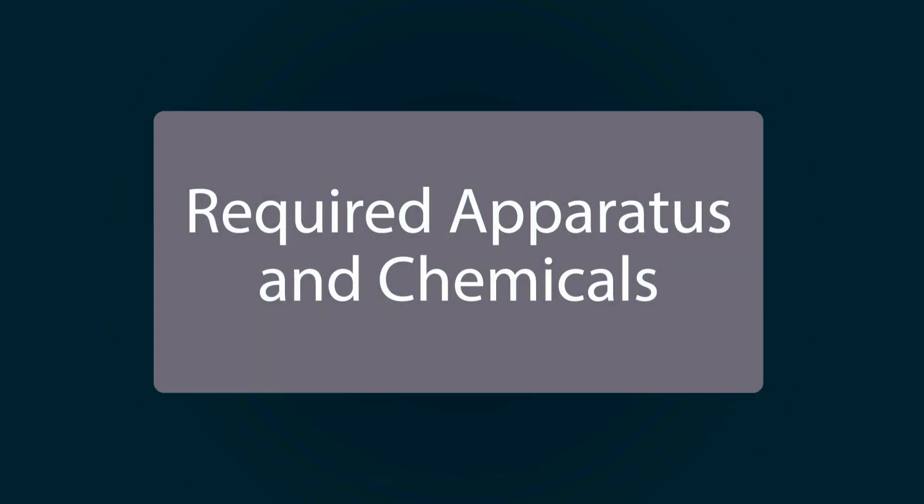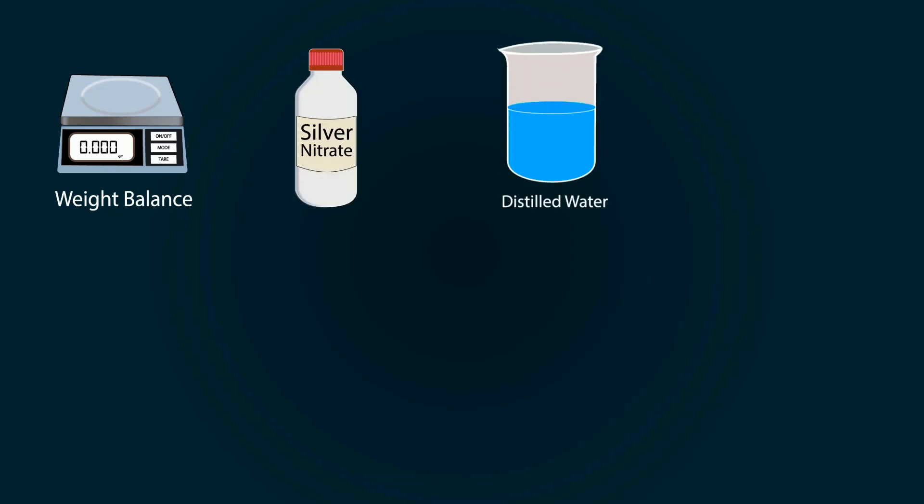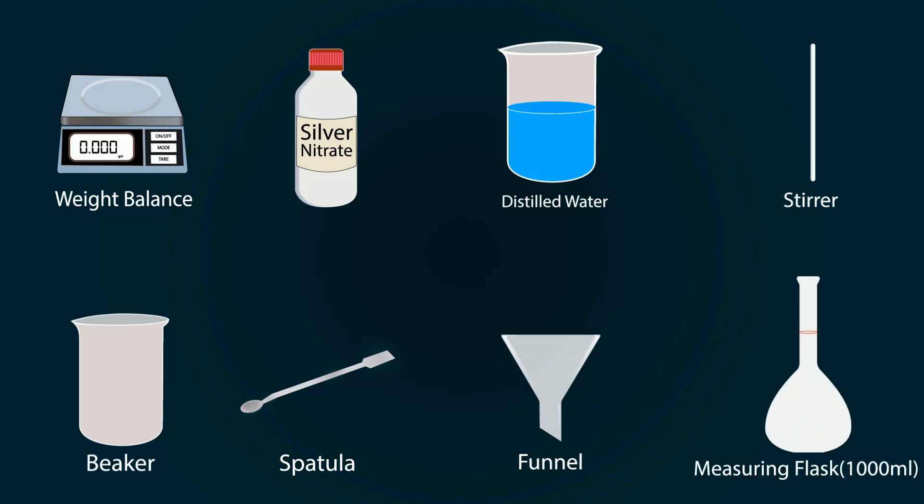Required apparatus and chemicals include weight balance, silver nitrate bottle, distilled water in a beaker, a stirrer, an empty beaker, a spatula, one funnel and a volumetric flask of 1000 ml.